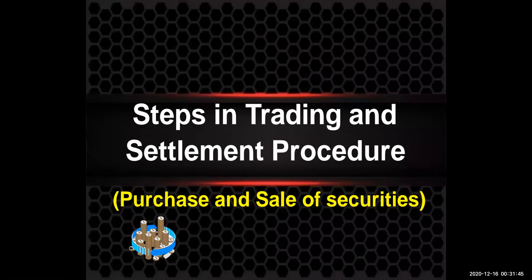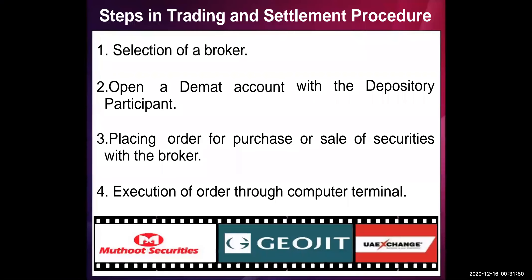When we talk about the steps in trading and settlement procedure — that is purchase and sale of security — the first step is selection of broker. The second step is to open a DMAT account with the depository participants. And thirdly, placing the order for purchase or sale of security with the broker.